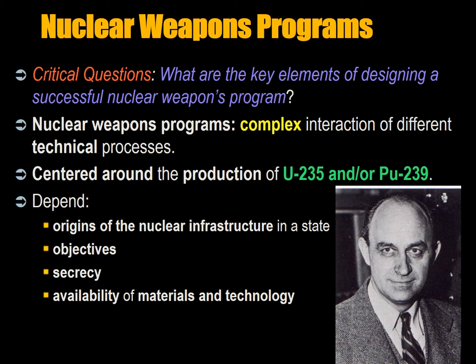Nuclear weapons programs are a complex interaction of different technical processes. They are centered around the production of uranium-235 and/or plutonium-239. The particular path depends as much on the origins of the nuclear infrastructure in a state as it does about objectives, secrecy, and the availability of materials and technology. So it's not simply an engineering problem — it's a political problem, which is why you're learning this.